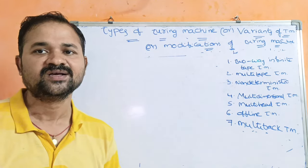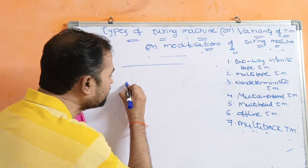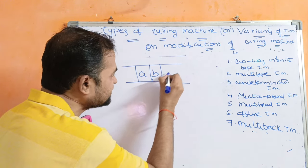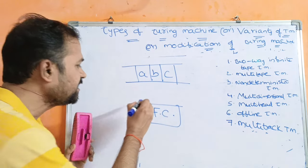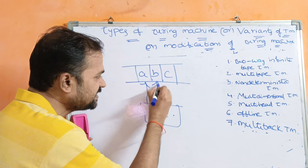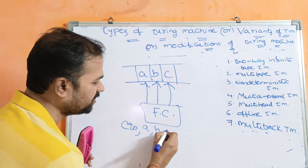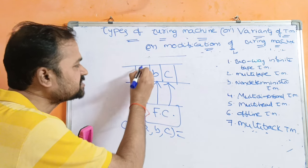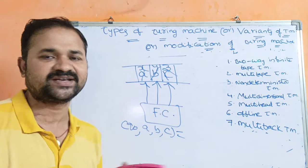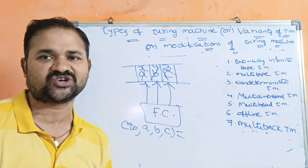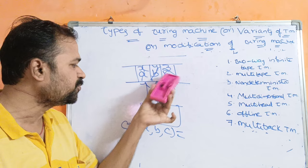Now let us see the multi-head Turing machine. Multi-head means instead of one read-write head, we can have multiple read-write heads. Here we have only one input tape — let the input tape contain symbols a, b, c — and only one finite control, but multiple read-write heads: first head, second head, third head. Let the heads point to a, b, c respectively; then we can replace a with x, b with y, c with z, and move each head either right or left. So multi-head means multiple heads but only one input tape and one finite control.